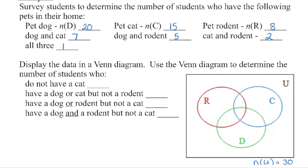Pause the video and see if you can take this information and organize it into the Venn diagram, then resume and we'll compare what you did to what we should have done. If you made mistakes, that's okay — we're going to correct them and look at why this is the way to go about this problem.